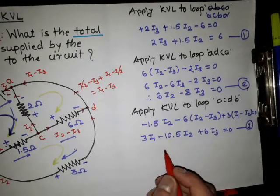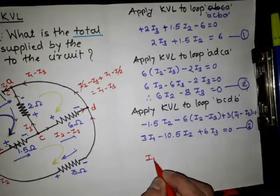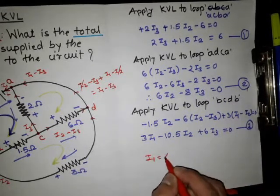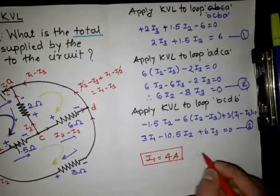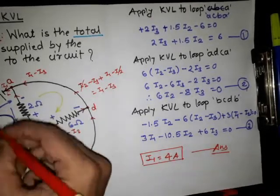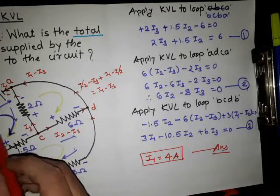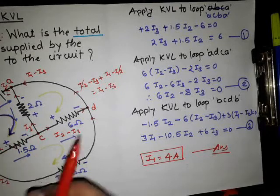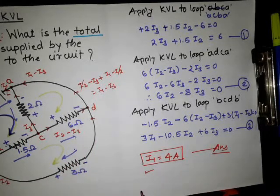By solving these three equations, we get I1 equals 4 amperes. This is the final answer. We only needed to find the current flowing through the 6V battery, so we did not need to calculate I2 and I3. The current supplied by the 6V battery is 4 amperes.